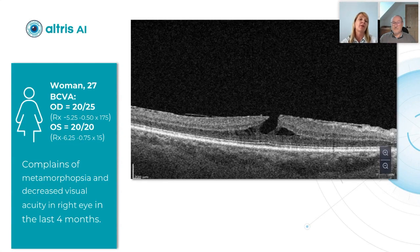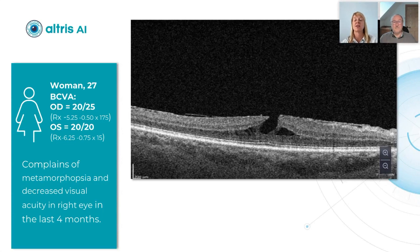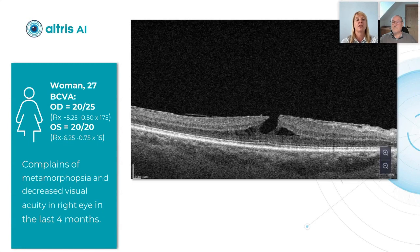Here are some real-life clinical examples of how AI can assist us. Here is a case of a 27-year-old woman with myopia, and she had complaints of metamorphopsia and decreased visual acuity in her right eye in the last four months.